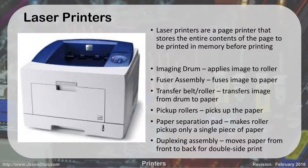Some of the components in a laser printer include the imaging drum, which applies the image to the roller; the fuser assembly, which burns the image onto the page by melting the toner to it; a transfer belt and roller, which transfers the image from the drum to the paper; and pickup rollers, which pick up the paper from the tray and feed it through the machine. The paper separator pad makes sure that the roller only picks up a single sheet — this often fails and you get paper jams.